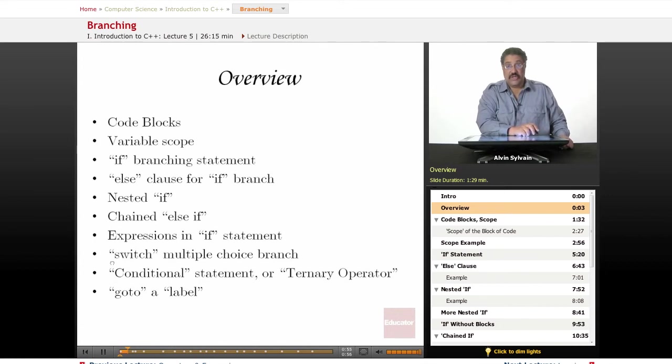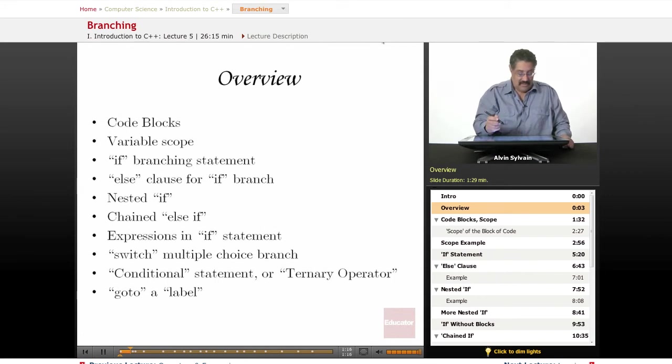Another type of branch is a switch statement which gives you a multiple choice. It's like the else if but with different type of conditions. The conditional statement or the ternary operator which we've seen a little bit of before, and although it's considered evil it is something that we need to talk about because you will see it in different people's code, is the go-to statement.